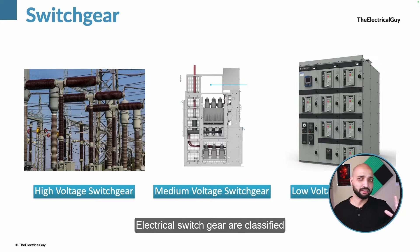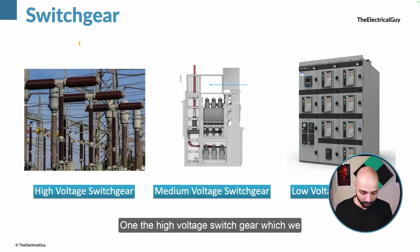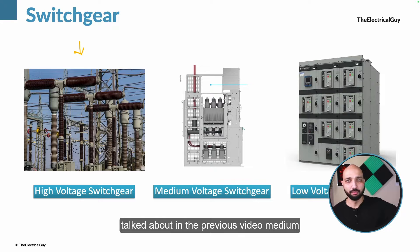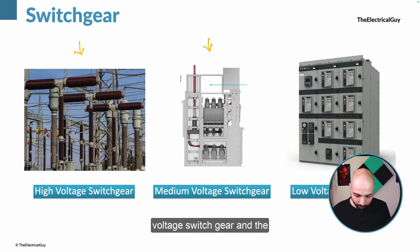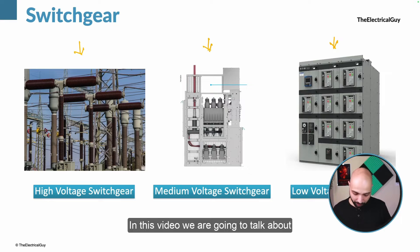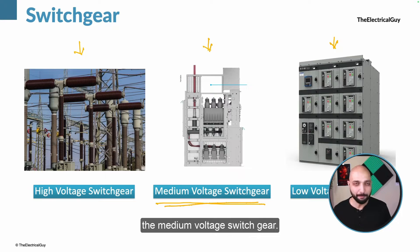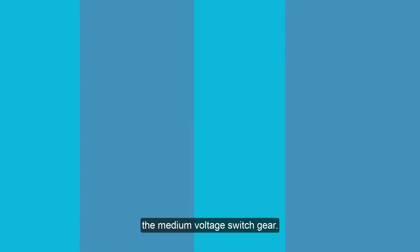Electrical switchgear are classified into three main types: high voltage switchgear, which was covered in the previous video, medium voltage switchgear, and low voltage switchgear. In this video we are going to talk about the medium voltage switchgear.